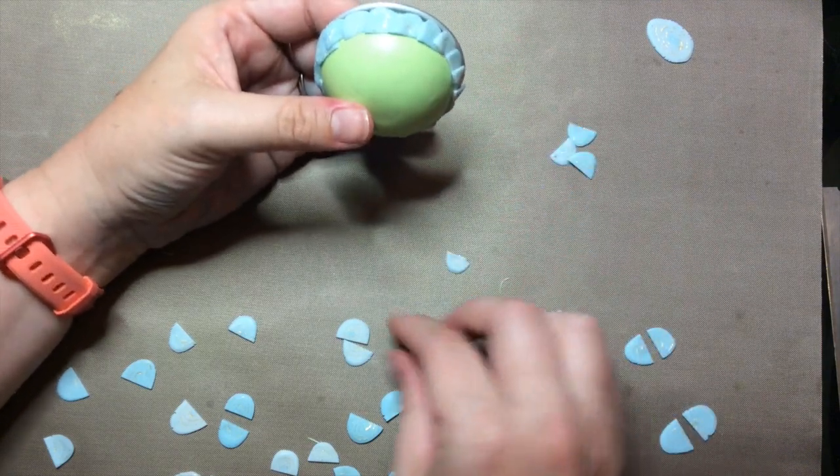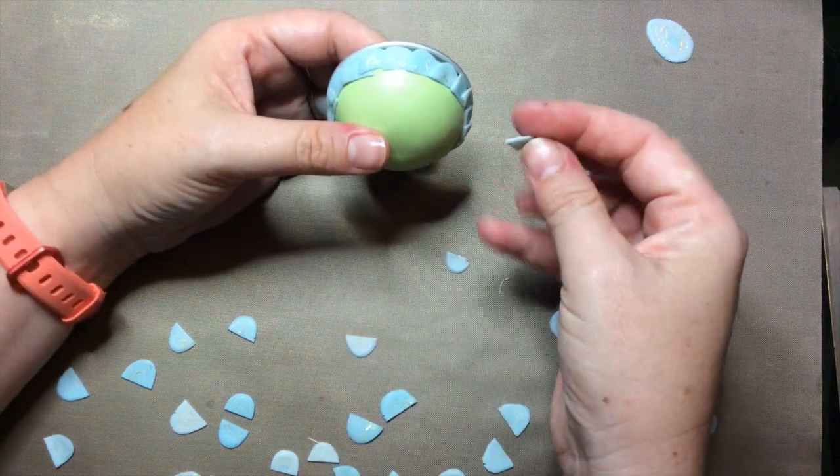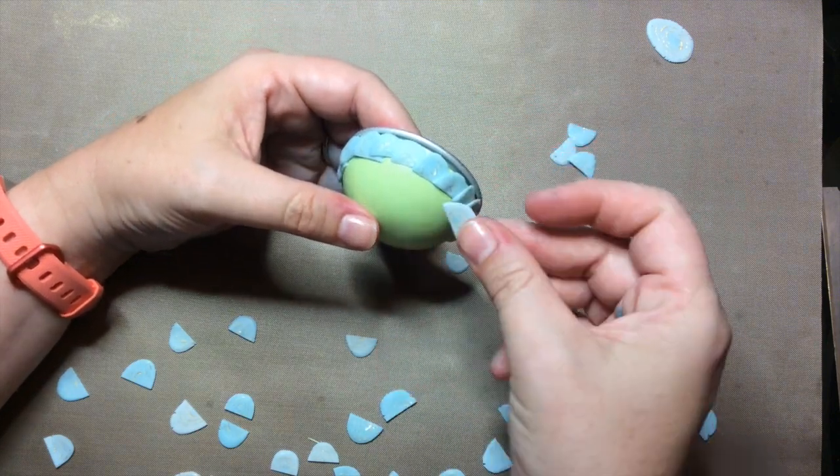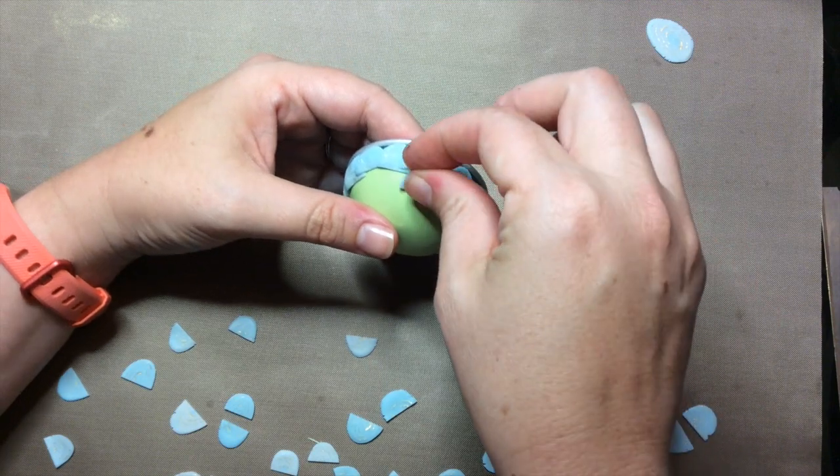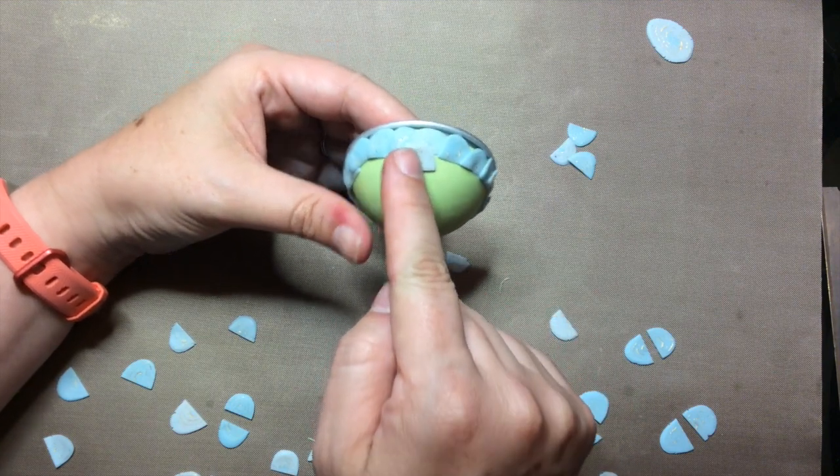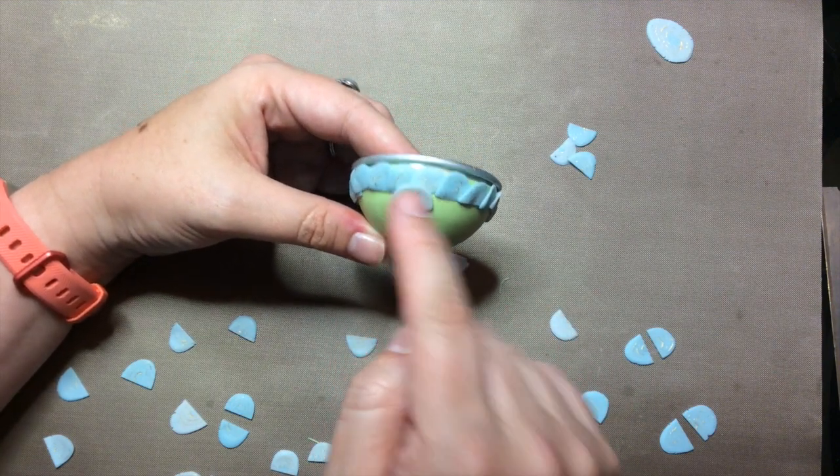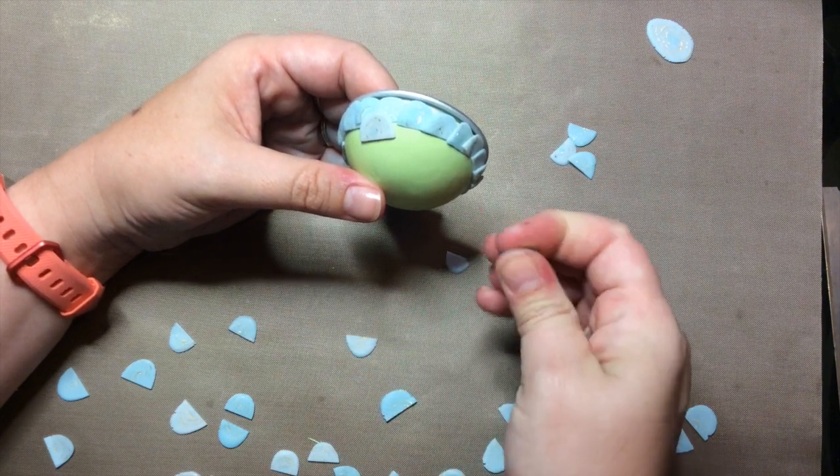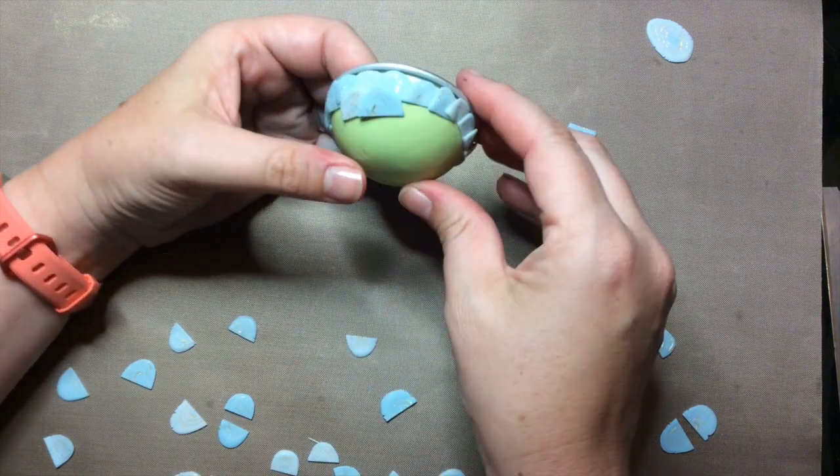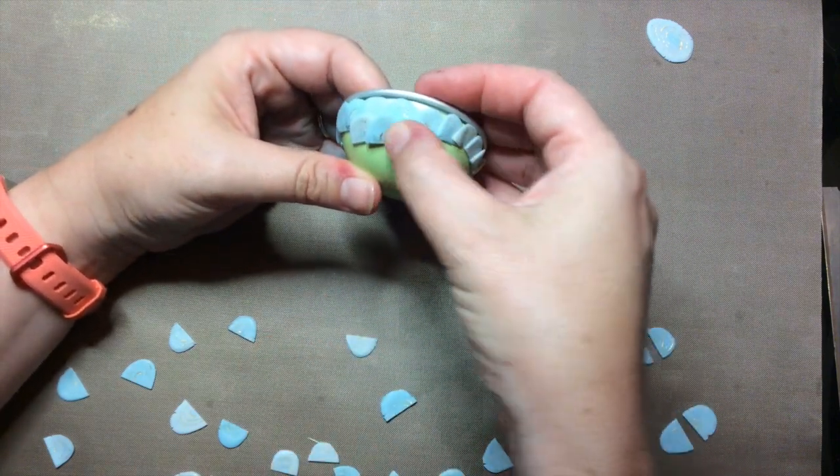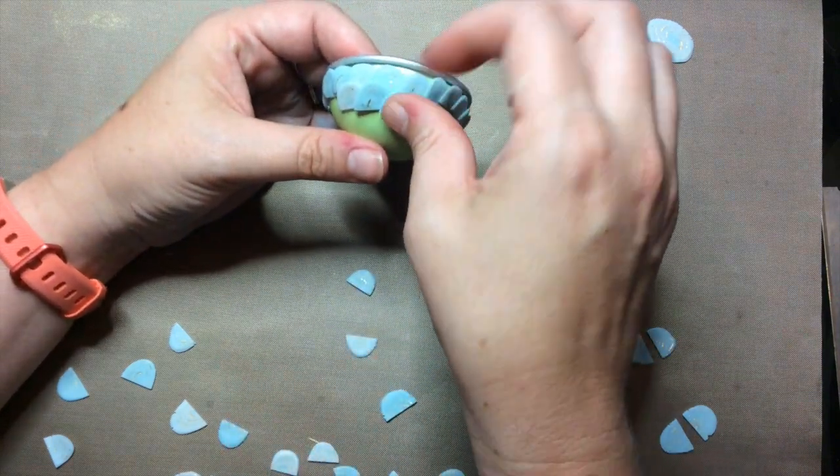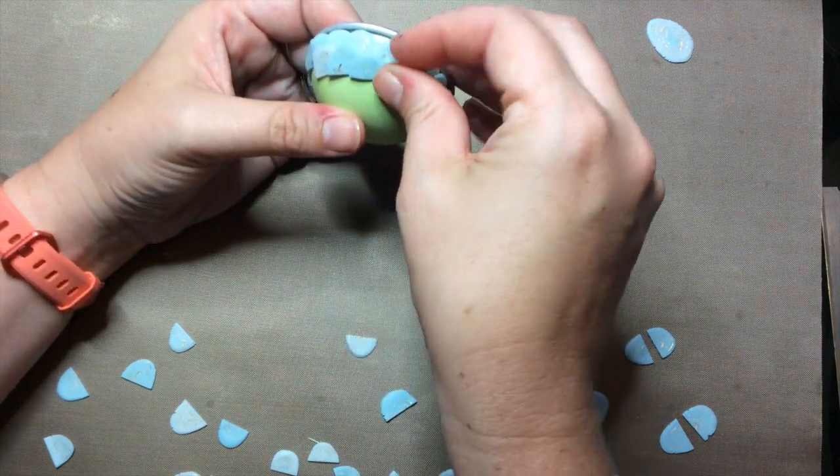And then we're just going to start on the next row. And as I put these down, I'm more or less looking for the better side so that when they show, we'll see the nice looking side. And I'm going to put it like a scale would be where the middle of the scale is overlapping where the other two next to it come together. More or less. It depends on how big your pieces of clay are.